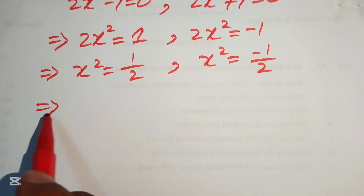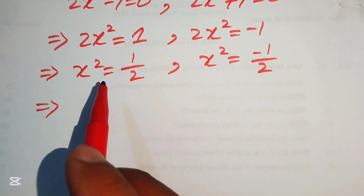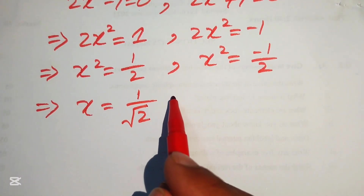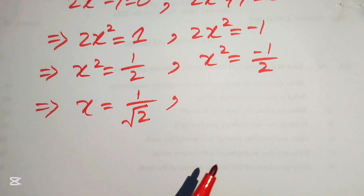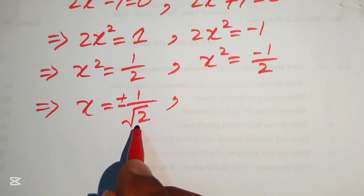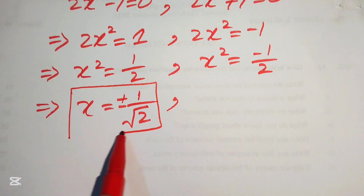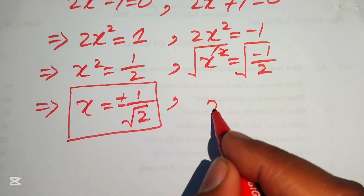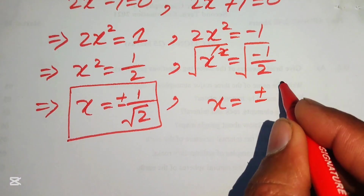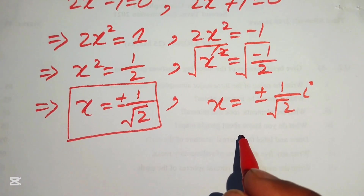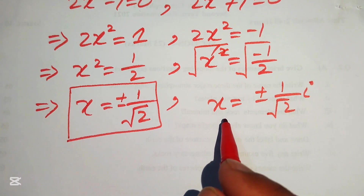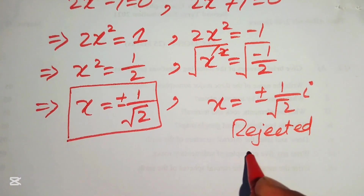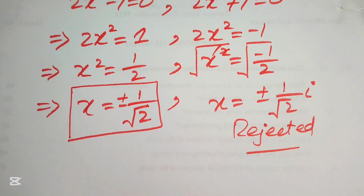Taking square roots: from Case 1, x = ±1/√2. From Case 2, x = ±i/√2. However, x must be a real number, so we reject Case 2 since it gives a complex value. We keep x = ±1/√2.